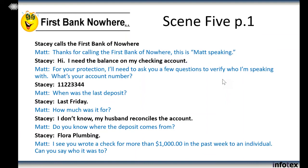Scene 5: Stacy calls the First Bank of Nowhere. Matt: Thanks for calling the First Bank of Nowhere, this is Matt speaking. Stacy: Hi, I need the balance on my checking account. Matt: Sure, I'd love to help you with that — but first, for your protection, I'm going to need to ask you a few questions to verify who I'm speaking with. Can I get your account number please? Stacy: Sure, it's 1-1-2-2-3-3-4-4. Matt: Alrighty, and can you tell me the date of your last deposit? Stacy: It was last Friday. Matt: Okay, and about how much was that deposit for? Stacy: I don't know, my husband reconciles our account. Matt: Okay, could you tell me where the deposit came from? Stacy: Yeah, it came from Flora Plumbing.